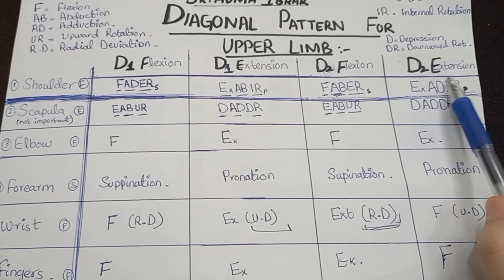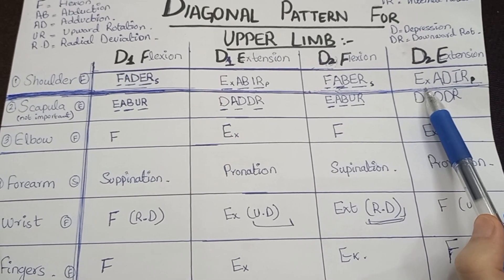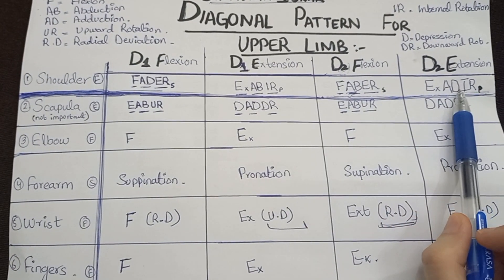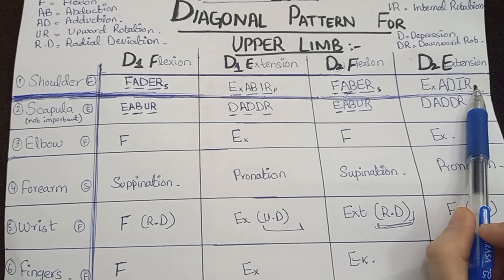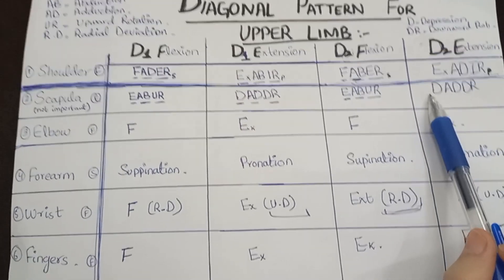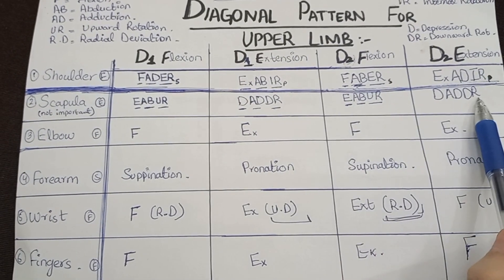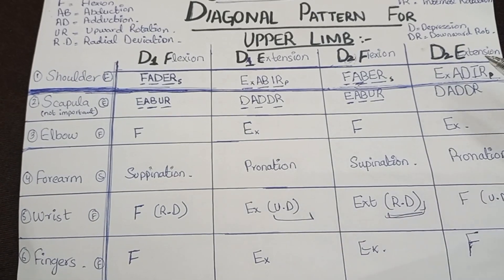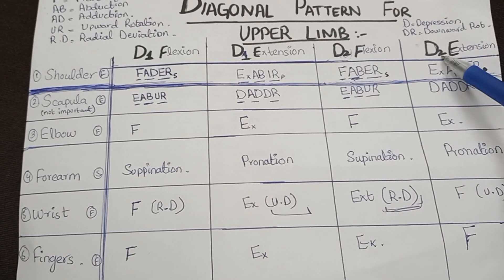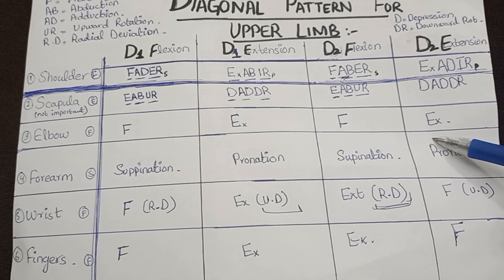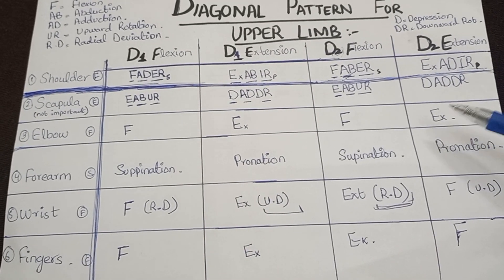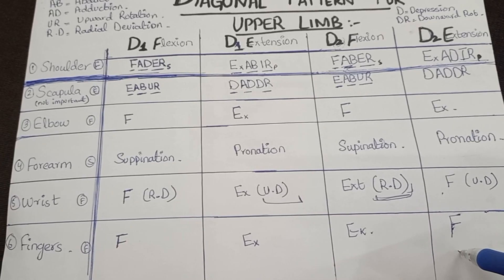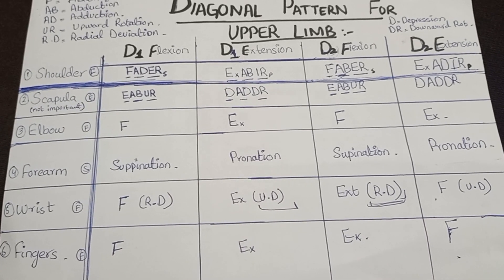For D2 extension, the mnemonic is extension, adduction, internal rotation — with 'P' for pronation. For the scapula, same as D1 extension: depression, adduction, and downward rotation. There will be extension in two joints — shoulder and elbow — and flexion in two joints — wrist and fingers. Pronation occurs in the forearm. This completes the diagonal patterns of the upper limb.